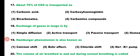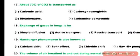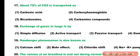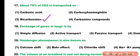Question number 17. About 70% of carbon dioxide is transported as: carbonic acid, carboxyhemoglobin, bicarbonates, or carbo-amino compounds. Correct answer is option 3. About 70% of carbon dioxide is transported as bicarbonates.